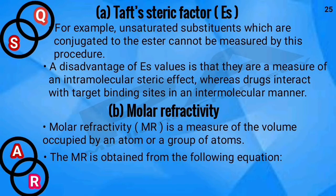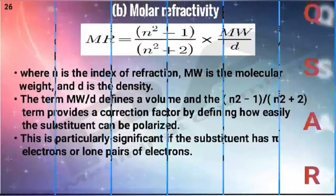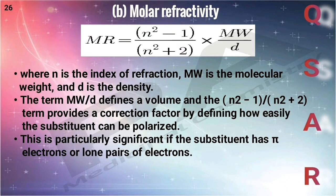The next parameter is molar refractivity, represented by MR. It is a measure of the volume occupied by an atom or group of atoms, and can be obtained from the formula: MR = [(n² − 1) / (n² + 2)] × (MW / d). Here, n represents the index of refraction, MW is the molecular weight, and d is the density. The term MW/d is called the volume, and (n² − 1)/(n² + 2) provides a correction factor, which is particularly significant if the substituent has pi electrons or lone pairs of electrons.